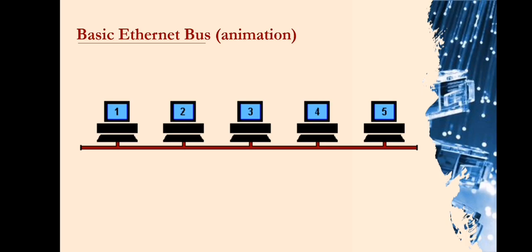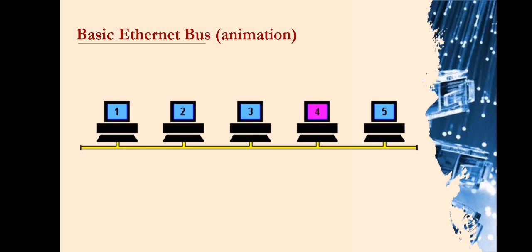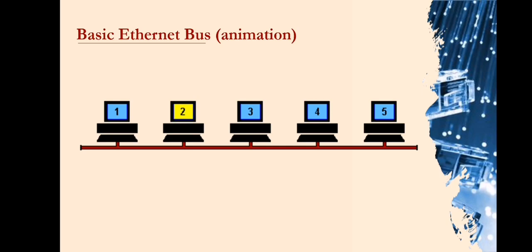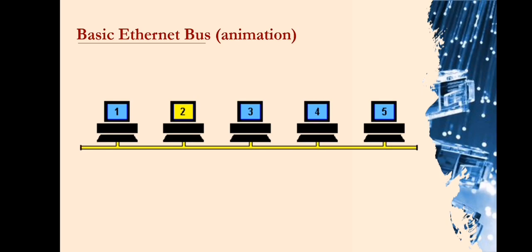So what happens in this illustration? Machine 2 wants to send a message to Machine 4, but first it checks to make sure no one else is using the network. If it is all clear, it starts to transmit its data on the network, represented by the yellow flashing screen. Each packet of data contains the destination address, the sender address, and the data to be transmitted. The signal moves down the cable and is received by every machine on the network, but because it is only addressed to Machine 4, the other machines ignore it.